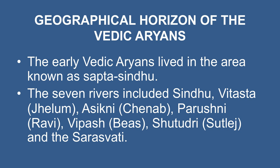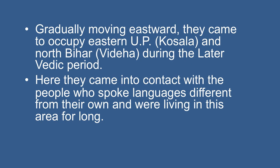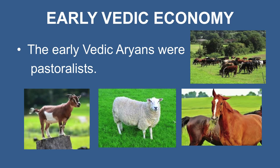The seven rivers included Sindhu, Vitasta, Ashkini, Parushni, Vipasa, Satrudi, and Saraswati. In this area, the Rig Vedic people lived and grazed their herds of cattle and other domesticated animals. Gradually moving eastward, they came to occupy Eastern UP and North Bihar during the later Vedic period, where they came into contact with people who spoke different languages. The early Vedic Aryans were pastoralists — cattle rearing was their main occupation. They reared cattle, sheep, goats, and horses for milk, meat, and hides.